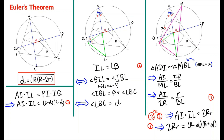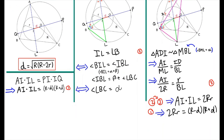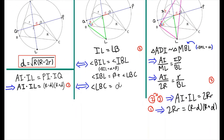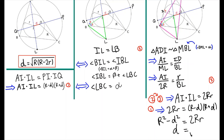Simplifying this equation, we get R squared minus d squared equals 2Rr. Rearranging and taking the square root of both sides, we get d equals the square root of R times R minus 2r. And that's how you prove Euler's Theorem in Geometry.